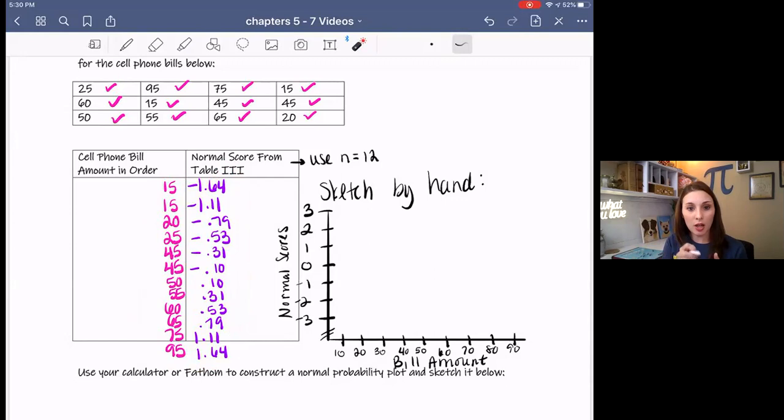So we're going to plot these points on the graph over here. If you have the notes, I did not include this in the PDF. I drew this afterwards as I was preparing. So if you want to pause it and kind of draw that graph out, you'll notice that I labeled it. The bottom says the bill amount, the side says the normal scores. And you'll also notice that I put zero a little bit higher because I am going to have some negative values. So I'm going to have some values down here and some values up here. It may not be linear. We're trying to see if it is.